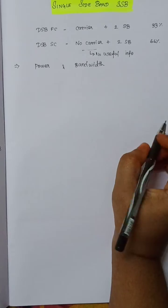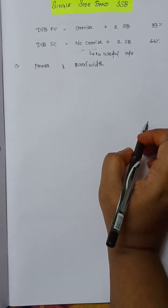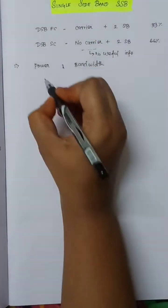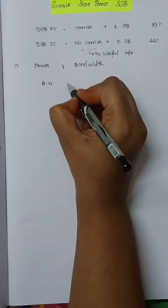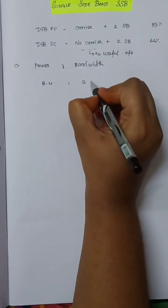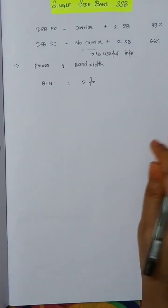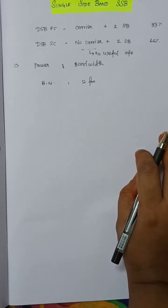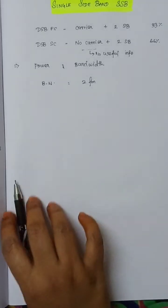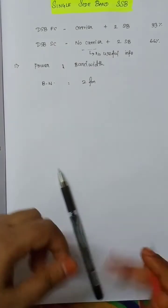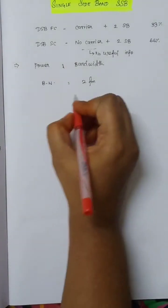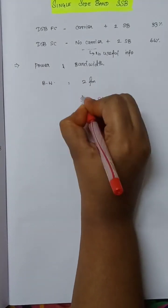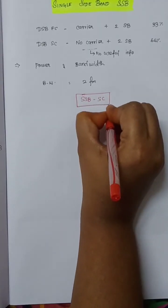Next, why do we need SSB? In both DSB-FC and DSB-SC, two sidebands of bandwidth 2FM are transmitted. Bandwidth reduction is not achieved. So we move to Single Sideband Suppressed Carrier — SSB-SC — to reduce bandwidth.